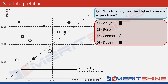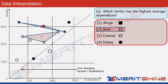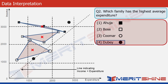Question two asks us to find the family with the highest average expenditure. We repeat the same centroid exercise for the Ahuja, Bose, Coomer, and Dube families. Since we've already marked the approximate centroids and midpoints, we simply need to identify which one is positioned farthest to the right on the x-axis — that family has the highest expenditure. In this case, it's the Dube family, so the answer is option four.